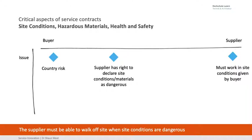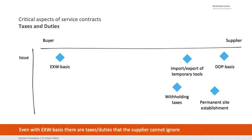Site hazard conditions — is the site safe to work on? If it's not safe, what's the remedy? How do I deal with country risk? Can I walk off site when it's dangerous? Taxes and duties — who's paying for it? Often there are withholding taxes and we may need support from the customer to recover those. Have we got a permanent site establishment? If we're on a site for more than 3 months, we may have one. Even on an ex-works basis, a service contract may have taxes or duties the supplier cannot ignore.